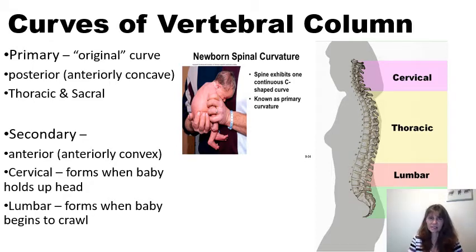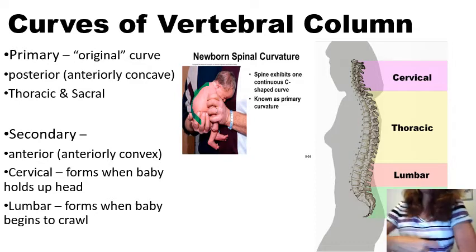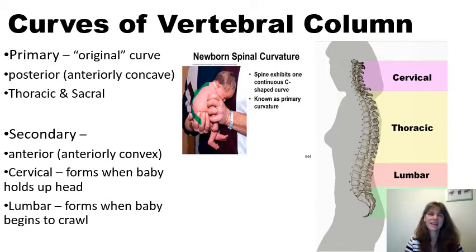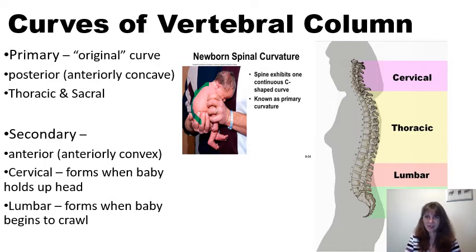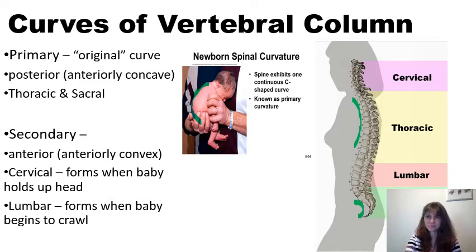The vertebral column includes curves. When a baby is born there is a primary C-shaped curve — that's what makes babies easy to hold. That primary curve is the original curve and it is concave anteriorly. This primary curve persists throughout our life in two areas: the thoracic curvature and the sacral curvature. This is referred to as a primary curve, also known as a kyphotic curve.